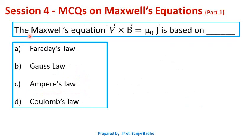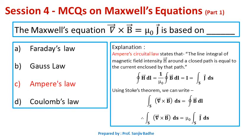Next one: the Maxwell's equation curl of B bar equals mu naught J bar is based on — Faraday's law, Gauss's law, Ampere's law, or Coulomb's law? Curl of B bar equals mu naught J bar is actually Maxwell's fourth equation, which is based on Ampere's circuital law.